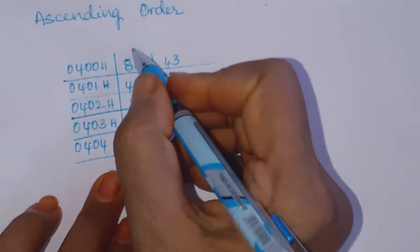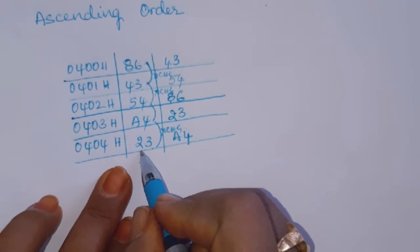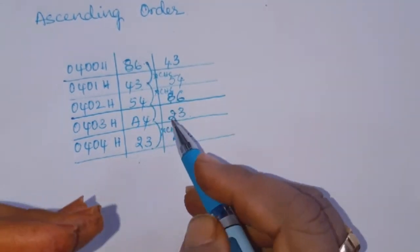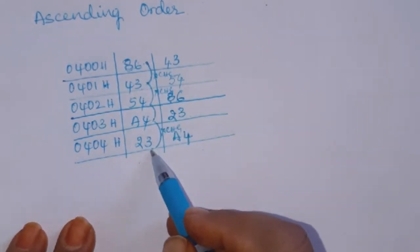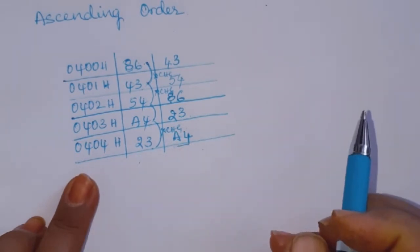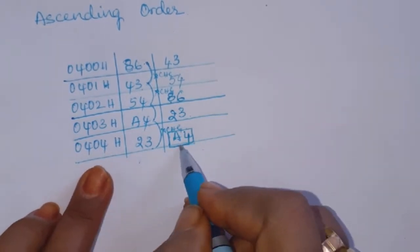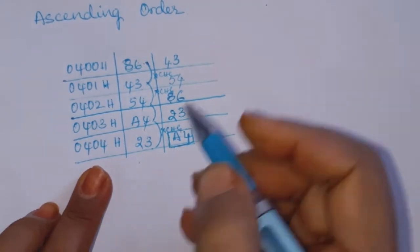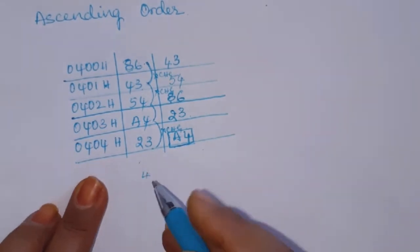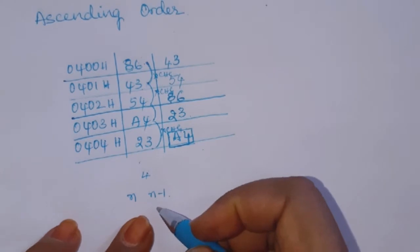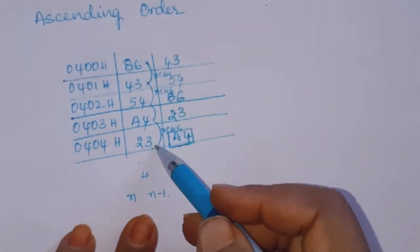After one pass — we call this one pass — after one pass the largest number will be in the last location, and its position is fixed. It will be in 404 location. With 5 numbers, 4 comparisons are done. That means if N numbers are there, N minus 1 comparisons will be done to get the largest number to the last location.